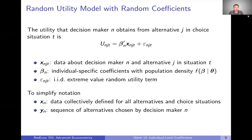We're going to start with a random utility model with random coefficients, just like we did with the mixed logit model. We're going to make one slight alteration: we're going to think about a panel data setting. We're thinking about a panel data setting because these conditional distributions of coefficients are better defined as you observe more and more choices that an individual makes.